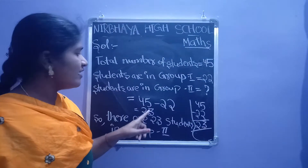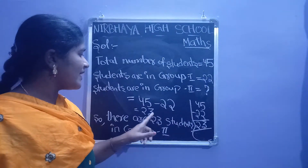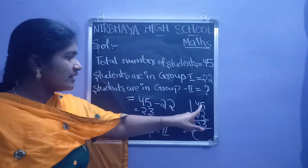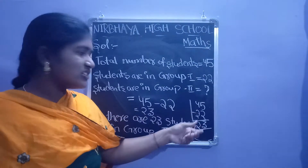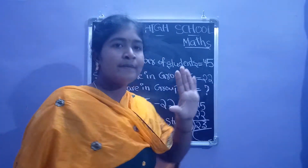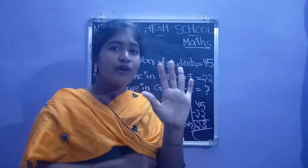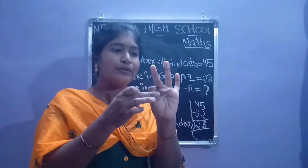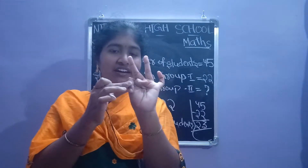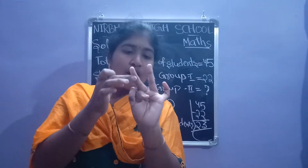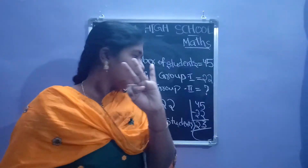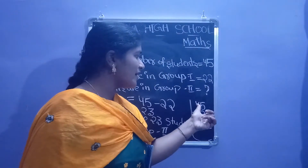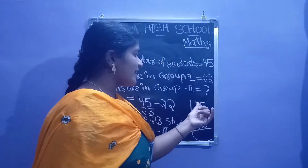What is the answer? 45 minus 22 equals 23. Let's do the subtraction, children. 5 minus 2: take 5 fingers and remove 2. After removing, 1, 2, 3 — 3 lines remaining. Write 3. Next, the tens side: 4 minus 2.